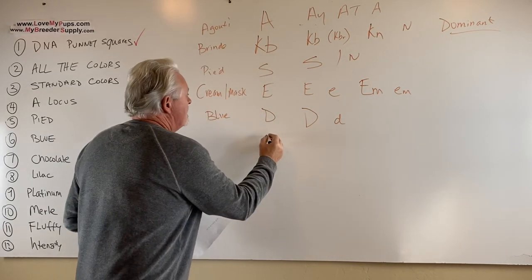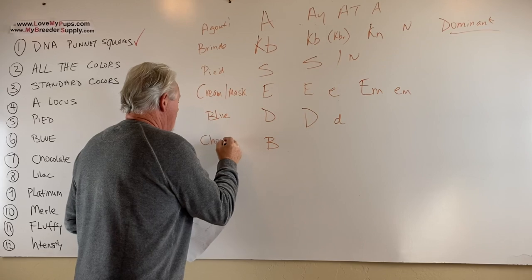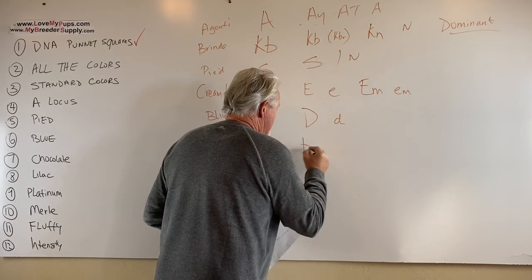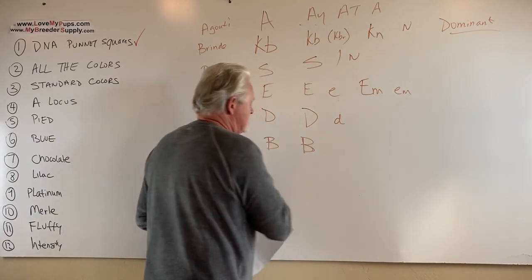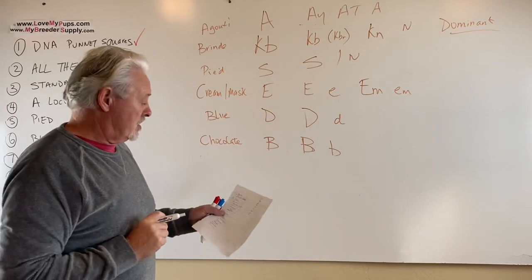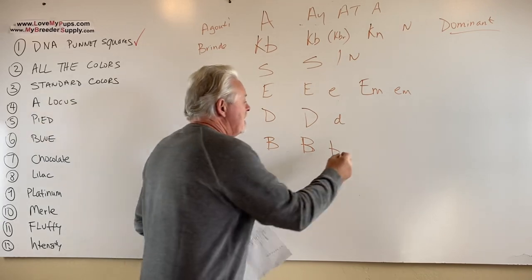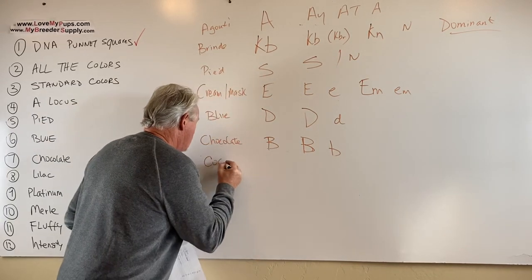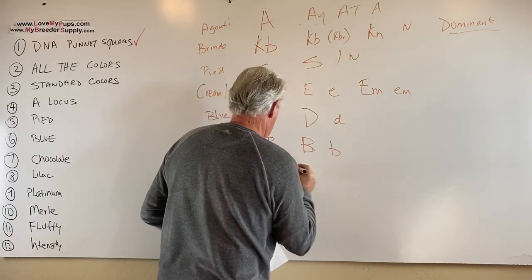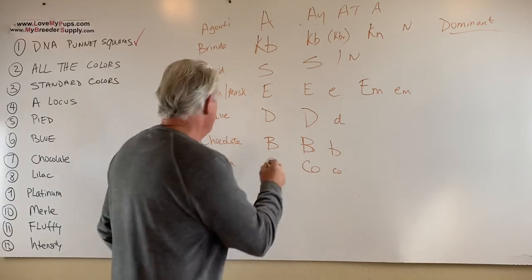The next one is the B gene, the chocolate. Again, recessive gene. It takes two copies to be expressed. There's two variations of this. That is either big B, doesn't have chocolate. Little b, it has what we call testable chocolate, or what we call is the Isabella version of chocolate. And there's another version of chocolate, which is called cocoa. And that one is either big CO, we don't have it, or little co, we have it. So there's two versions of chocolate.